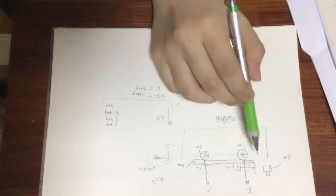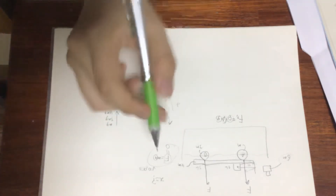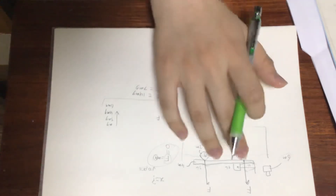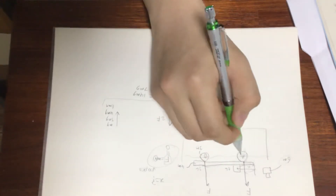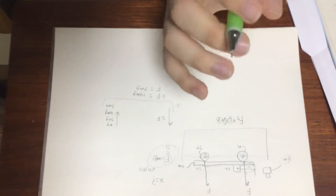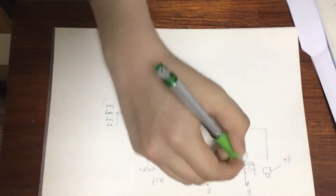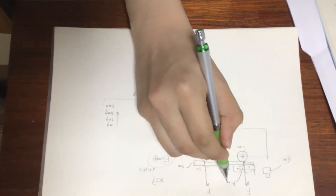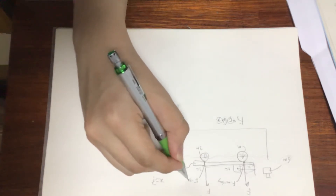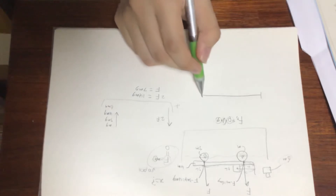Now we select a pivot point and say that all torques in each direction sum to zero so acceleration equals zero. We need to find the net forces being applied to the stick at each ball position. At A the net force is F minus mg, which is 7mg minus mg, giving 6mg upward. At B the net force is F minus 3mg, which is 7mg minus 3mg, giving 4mg upward.